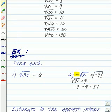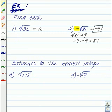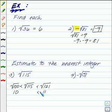You can also use this information to estimate to the nearest integer. For example, if I want to find the square root of a number that's not a perfect square, like 115, I can put it between two perfect squares. I know that the square root of 100 is 10, and I know that 115 is less than 121, and the square root of 121 is 11.